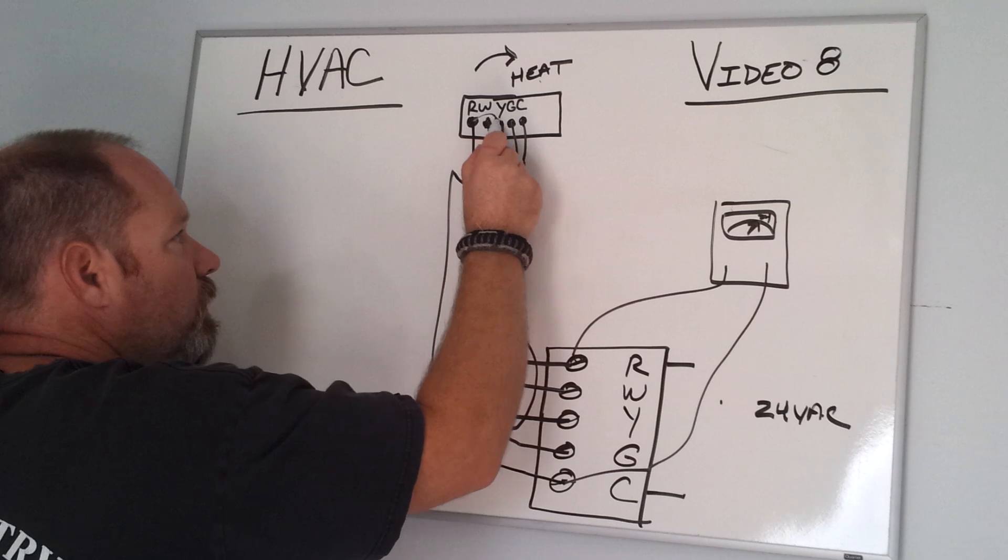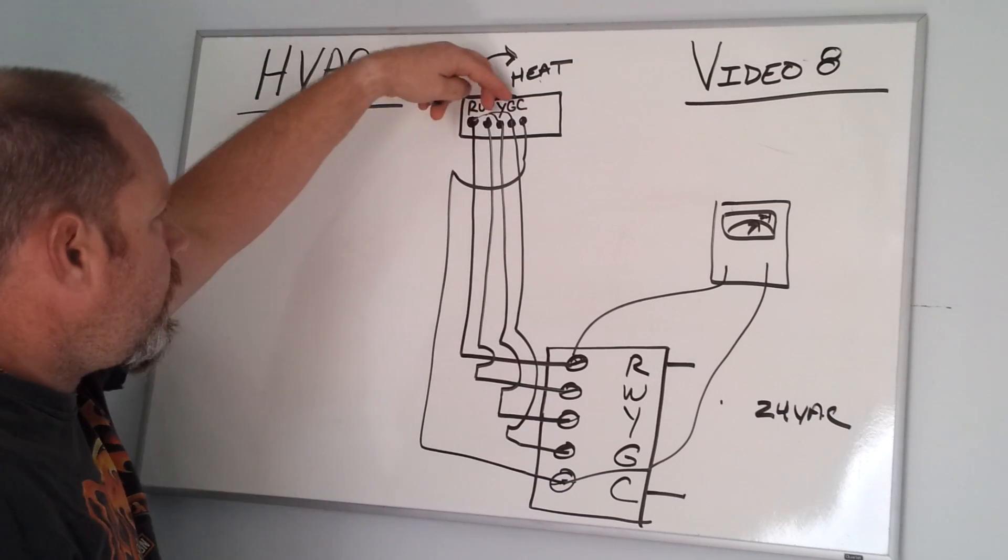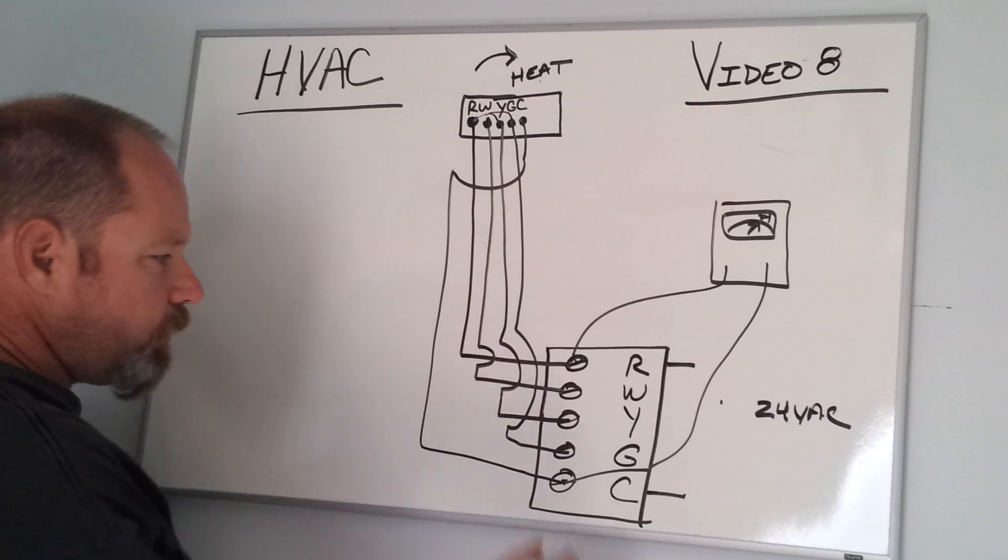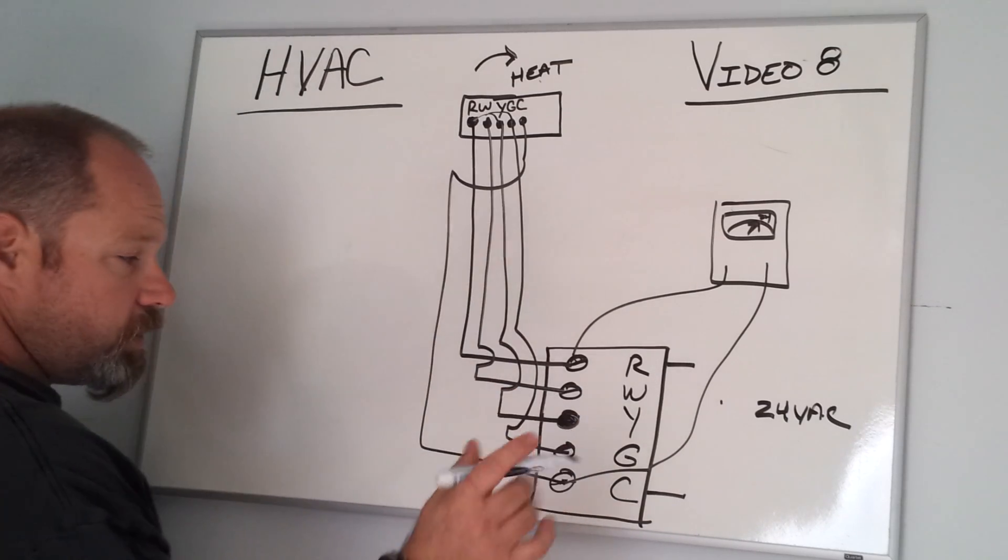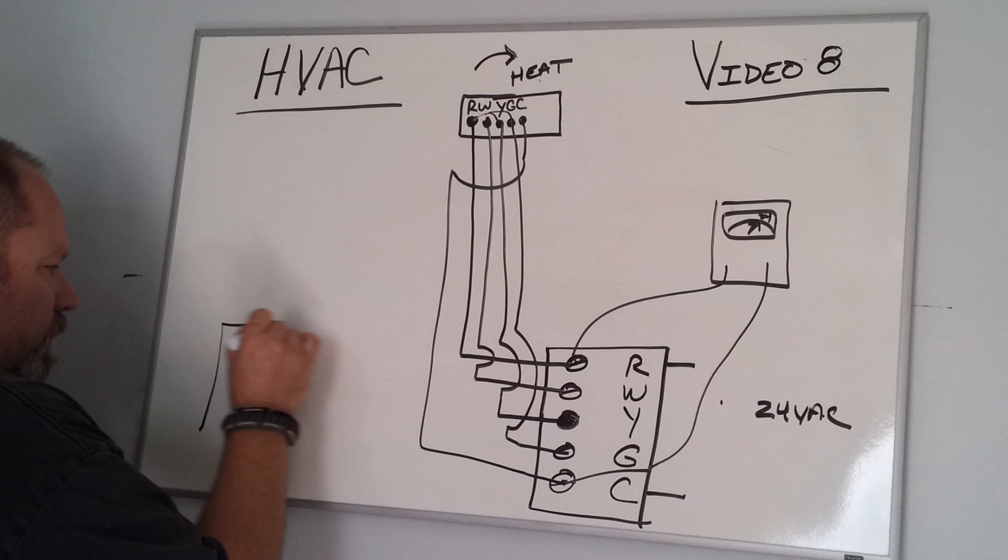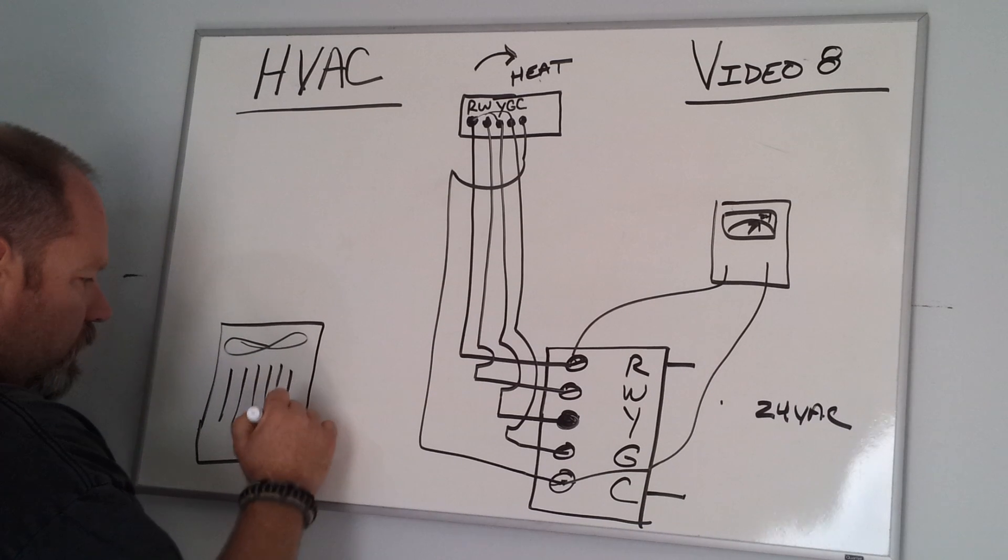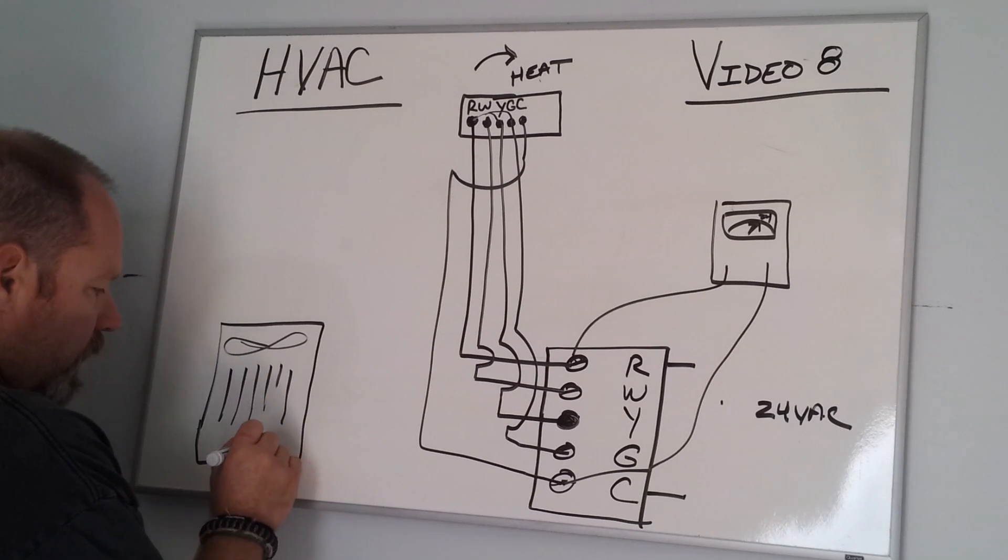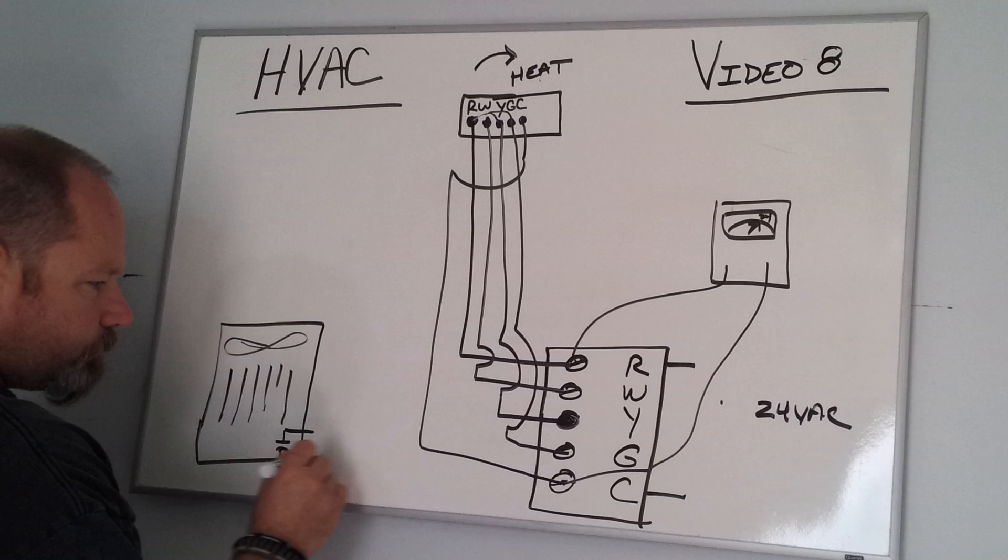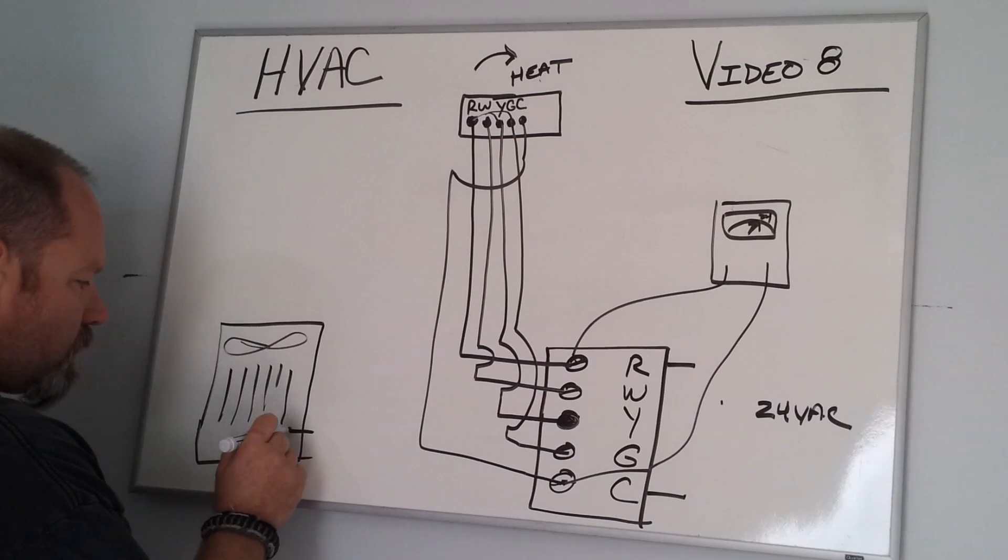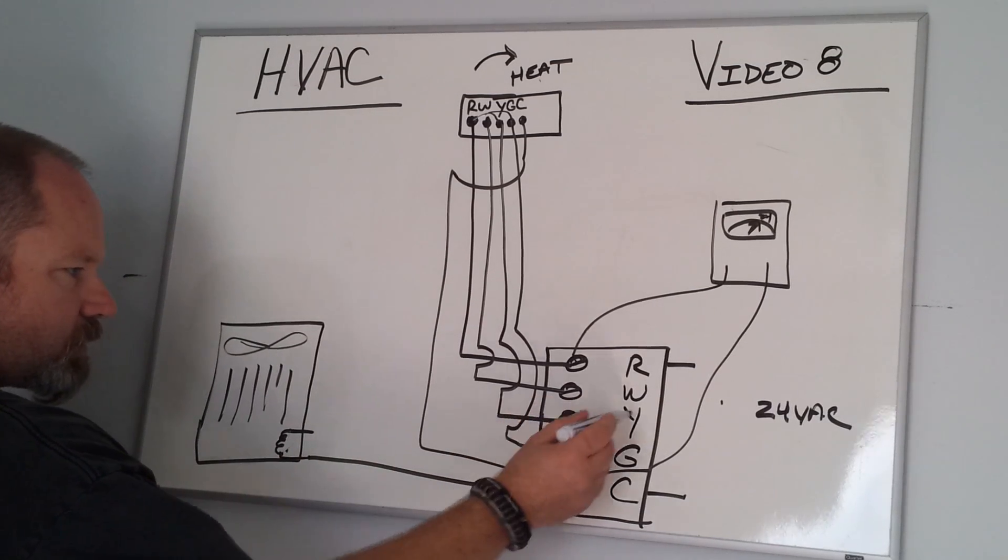Now if you're initiating a call for cooling, you're going to send it down the Y and the G terminal. The Y terminal is the call for cooling. Pretty much this is a dead terminal—there's really nothing going on here on most units. What you'll have is your outdoor unit where your fan blows out the hot air. You got all your coils here. There's a contactor in here, and that contactor is wired—it's a coil—and it's wired from C to Y.